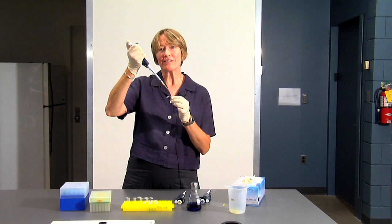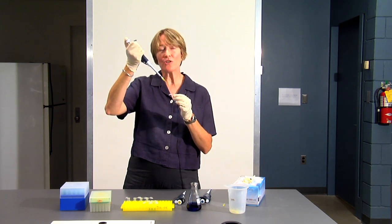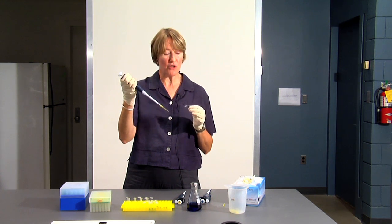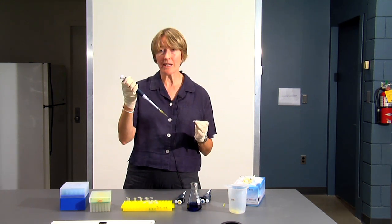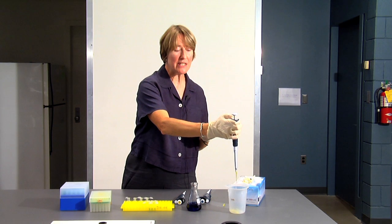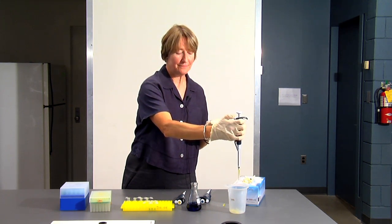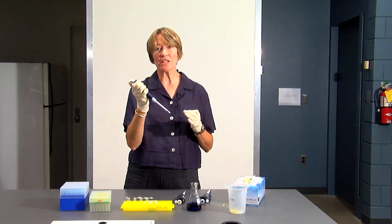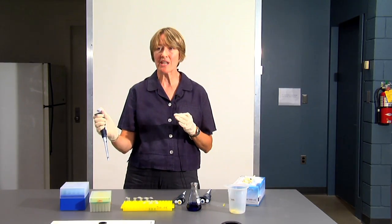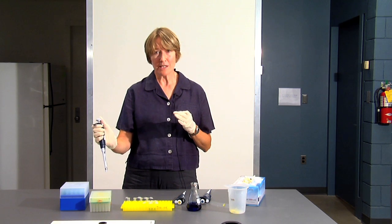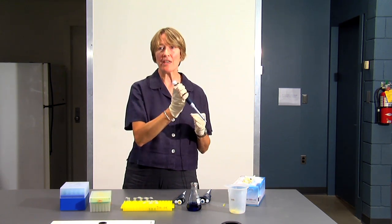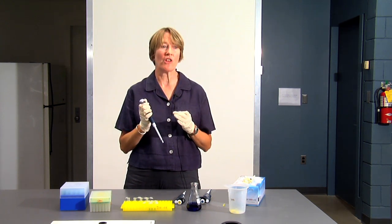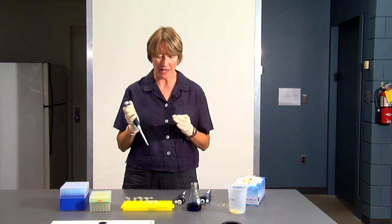When you've finished adding your solution to the tube, you will eject the tip into the waste bucket by pressing down on the tip ejector. This way you never actually have to touch the tip from the time that you take it out of the tip box until the time that you have finished your pipetting. And that way if you're working with toxic chemicals or bacteriologicals, you're not going to contaminate anything.